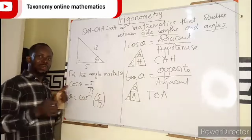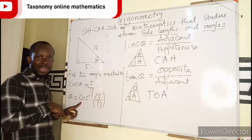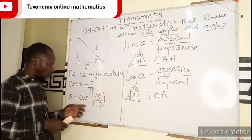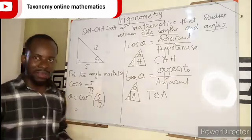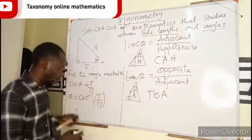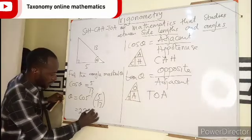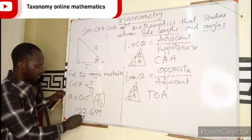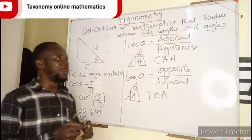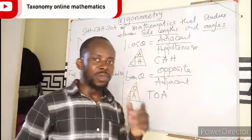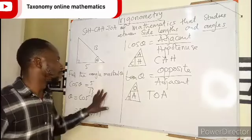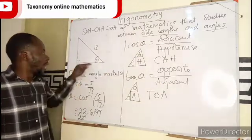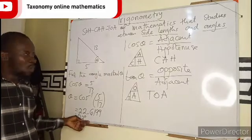With the calculator we are going to have 22.6199. If I want to approximate this to the nearest whole number it becomes 23 degrees. Measurement in trigonometry is either in degrees or in radian. You can see that finding the missing side of any right angle triangle using trig ratios is not a problem. You can also be asked to find the angle as we did, or you could be given the angle and you will be asked to find the missing side.